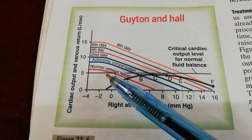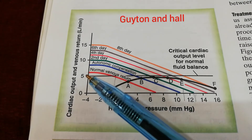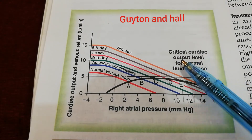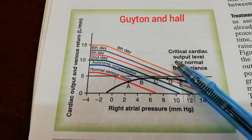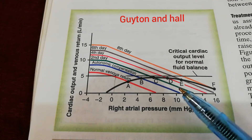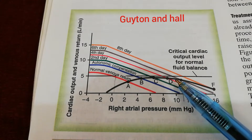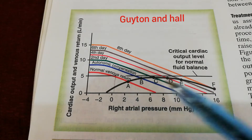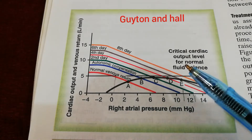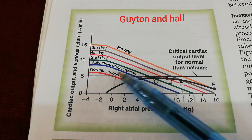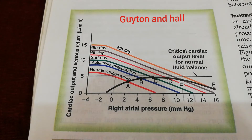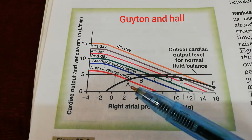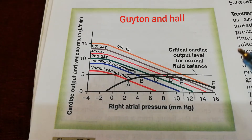This graph shows both cardiac output and venous return. The five liters per minute of cardiac output is basically the critical cardiac output level — the critical level for normal fluid balance. In decompensated cardiac failure, this black curve showing cardiac output never goes beyond this critical level of around five liters per minute. So cardiac output decreases below five liters per minute, which is the normal cardiac output.